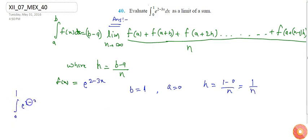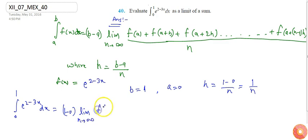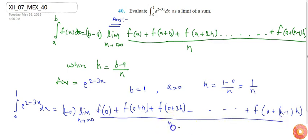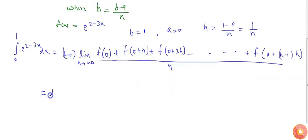Substituting into the formula, the integral from 0 to 1 of e^(2-3x) dx equals (b - a) times the limit as n tends to infinity of f(0) + f(0+h) + f(0+2h), up to f(0+(n-1)h), all divided by n.